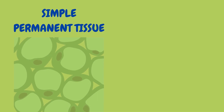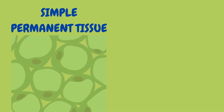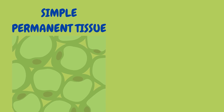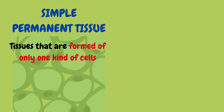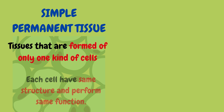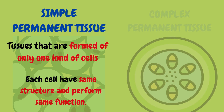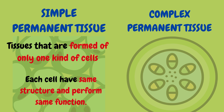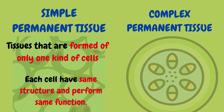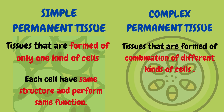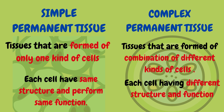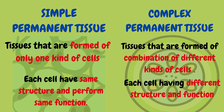Now let's discuss another kind of tissue, that is simple permanent tissue. Why do we call it simple? It's just because they are formed from only one kind of cells. And all the cells of this tissue will perform the same function as they all have the same structure.